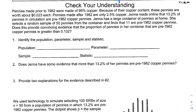Pennies made prior to 1982 were made of 95% copper, making them worth about 2.3 cents each. Pennies made after 1982 are only 2.5% copper. Jenna reads online that 13.2% of pennies in circulation are pre-1982 copper pennies. She selects a random sample of 50 pennies from her large container at home and finds that 11 are pre-1982 copper pennies. Does this provide convincing evidence that the proportion of pennies in her container that are pre-1982 copper pennies is greater than 13.2%?